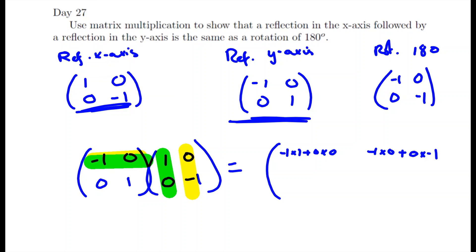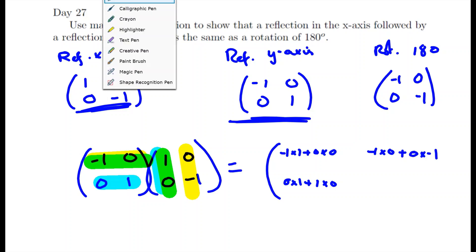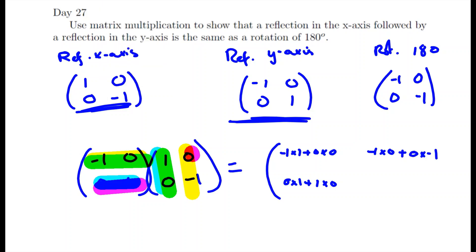We want bottom left, so bottom and left. So we're going to have 0 times 1 plus 1 times 0. And finally, if we want bottom right, we are going to have 0 times 0 plus 1 times negative 1.